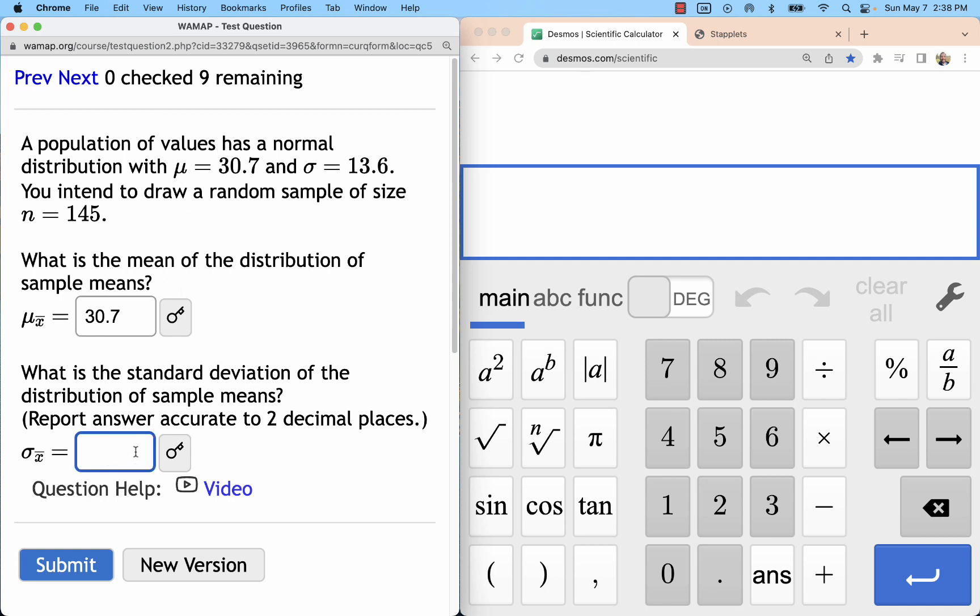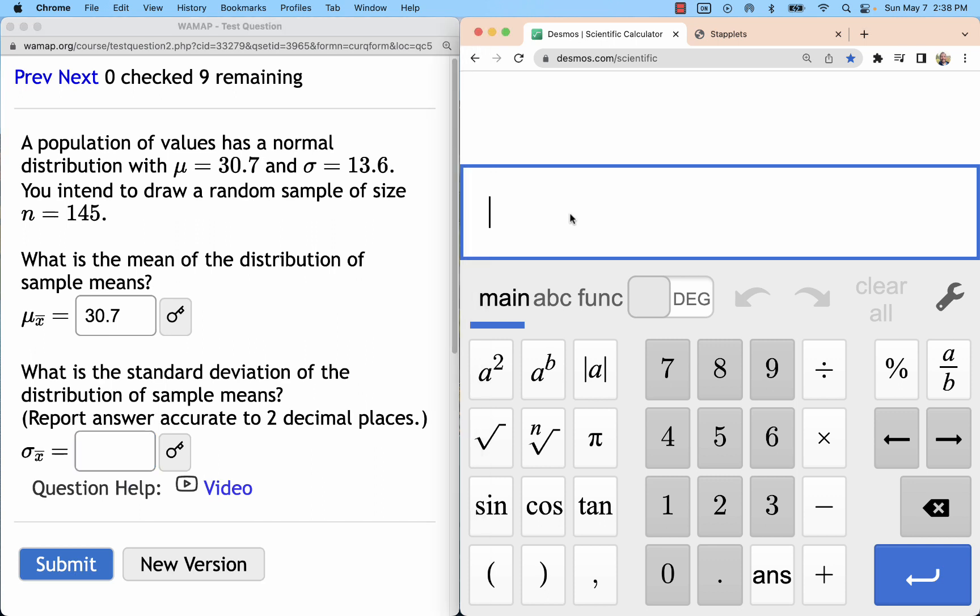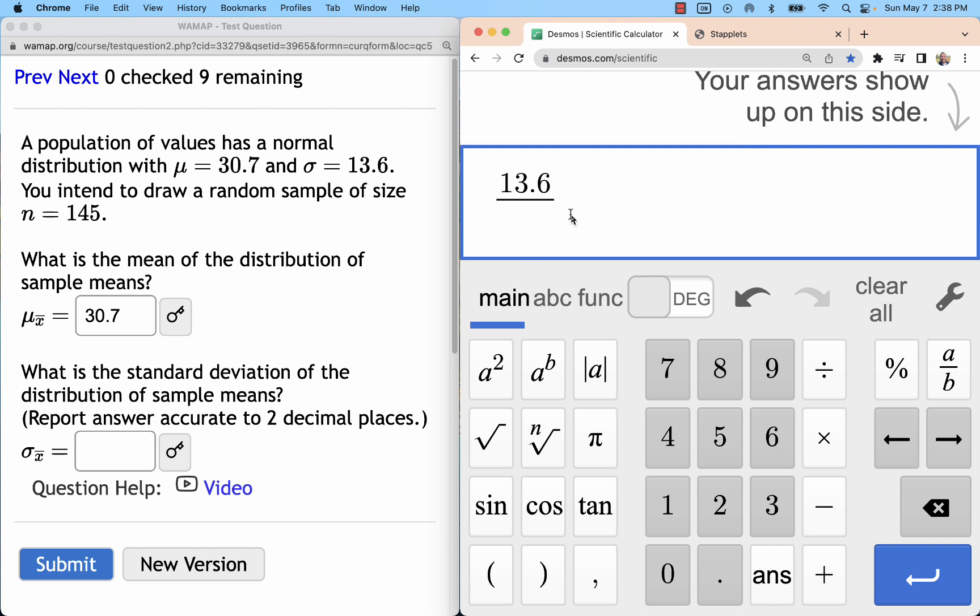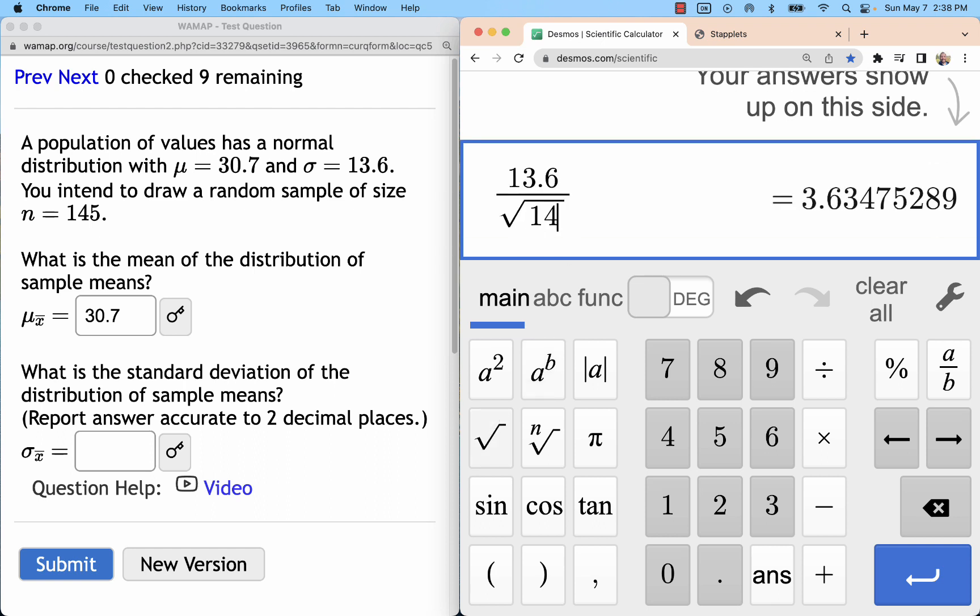Whereas the standard deviation will change. As the sample size increases, we will decrease the deviation from sample to sample. What we do is take that standard deviation from the original population and divide it by the square root of the sample size.